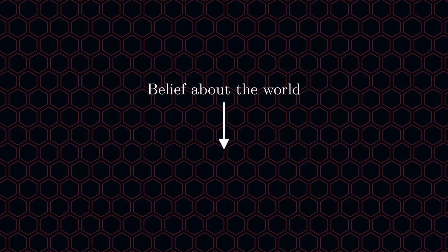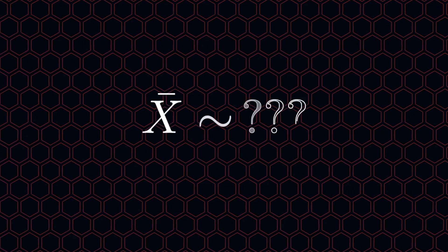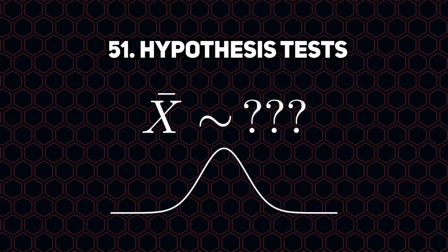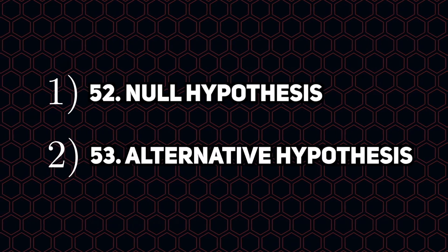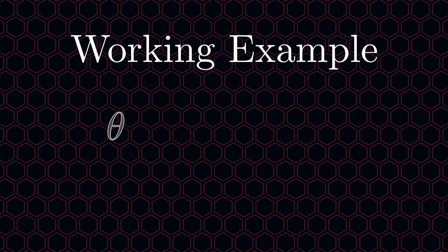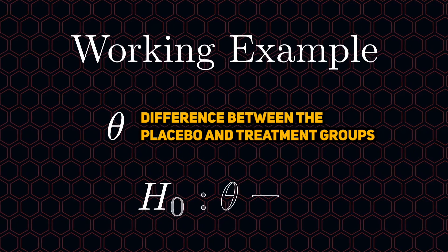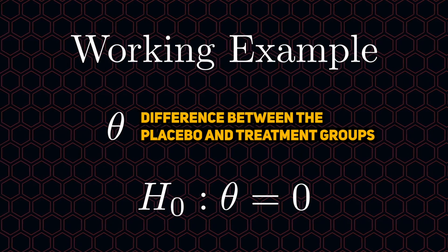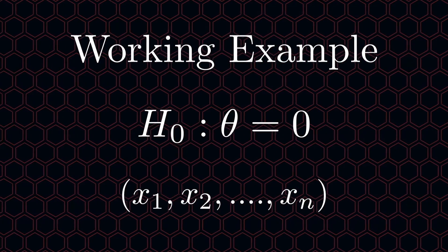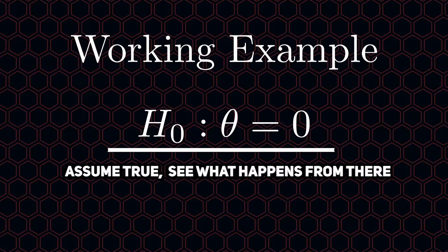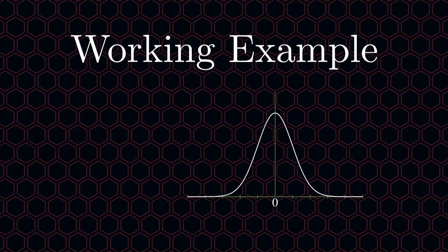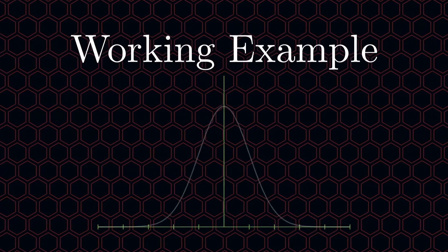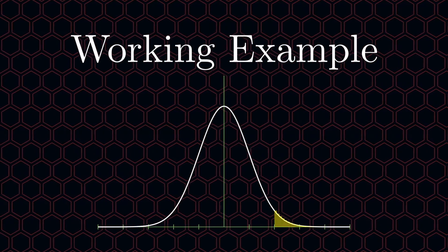Statisticians translate beliefs about a population into statements about the population parameters. Sampling distributions are crucial to understanding hypothesis tests. In hypothesis tests, we create two hypotheses. The first is the null hypothesis, which represents a belief about the world that we want to disprove. The second is the alternative hypothesis, which opposes the null. As an example, our parameter of interest will be the difference between treatment groups. Our null hypothesis is that there is no difference between the groups, so the parameter is equal to zero. We assume the null hypothesis is correct and extend our logic from there, which suggests a particular sampling distribution. Then we see where our estimator lies relative to this null distribution.